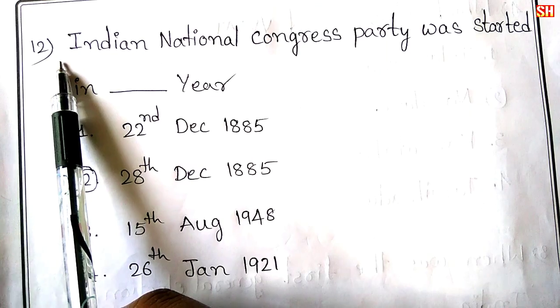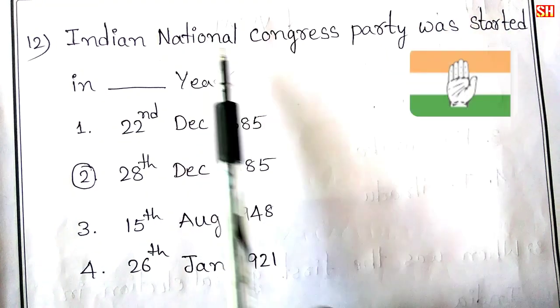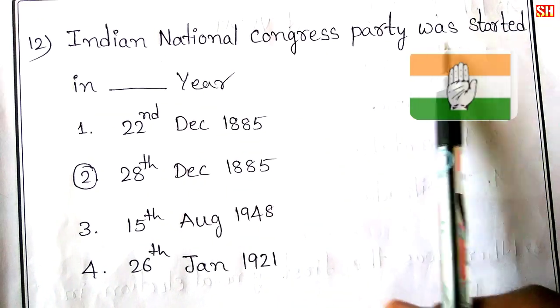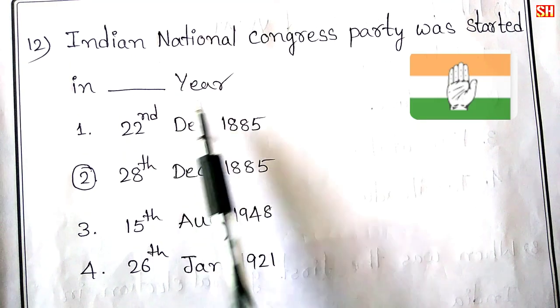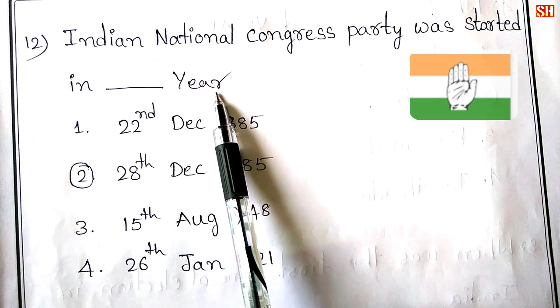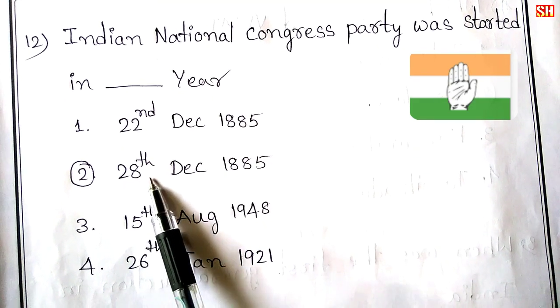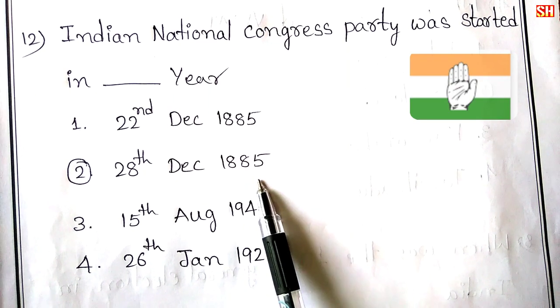Twelfth question: Indian National Congress Party was started in which year? Answer: 28th December 1885.